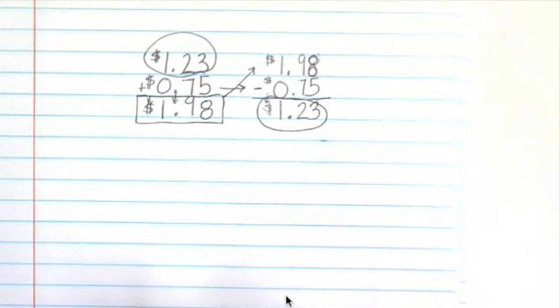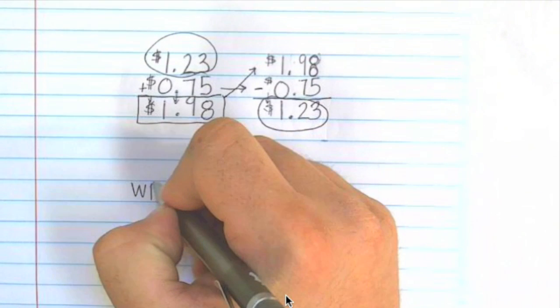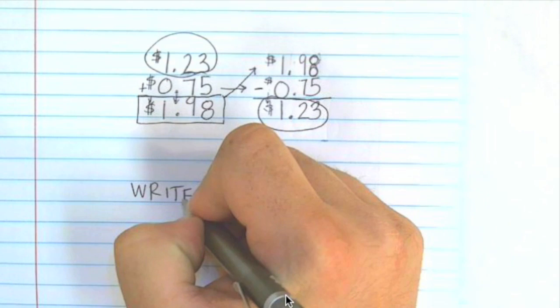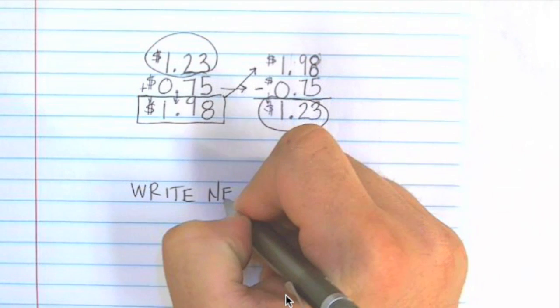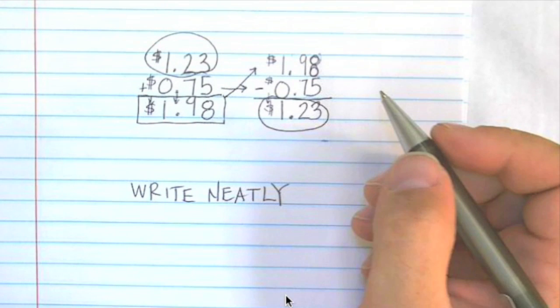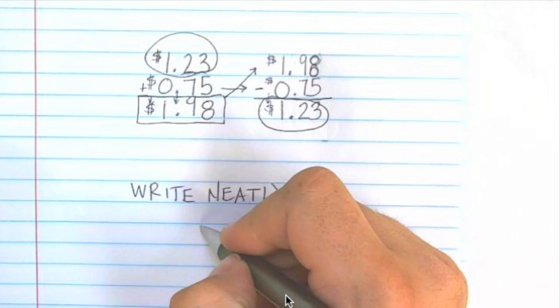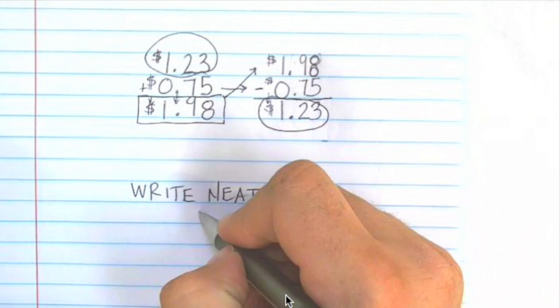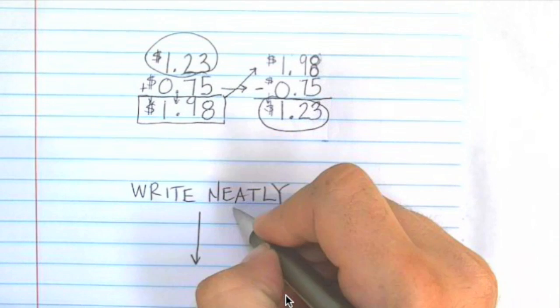So the tip is to write neatly, and make sure that your digits, your decimal points, your dollar signs are lined up on top of each other.